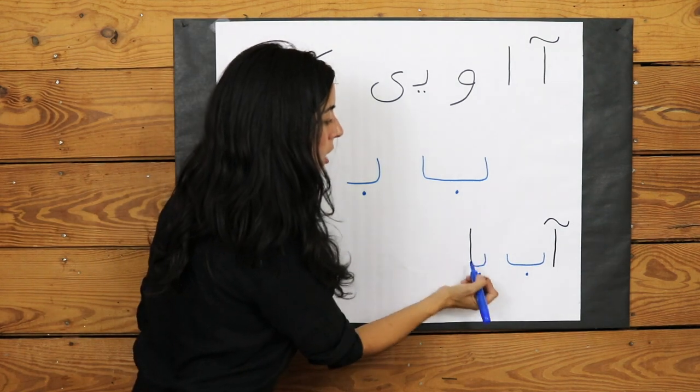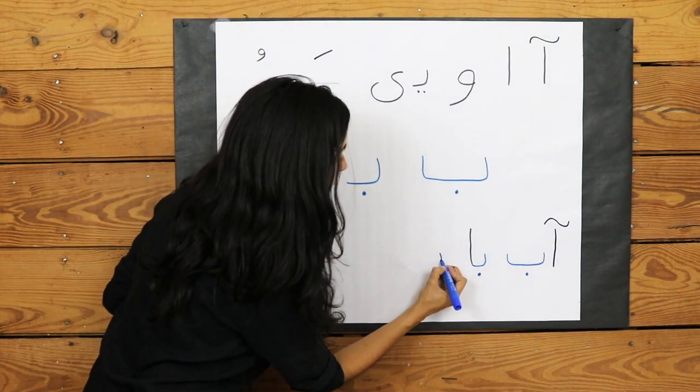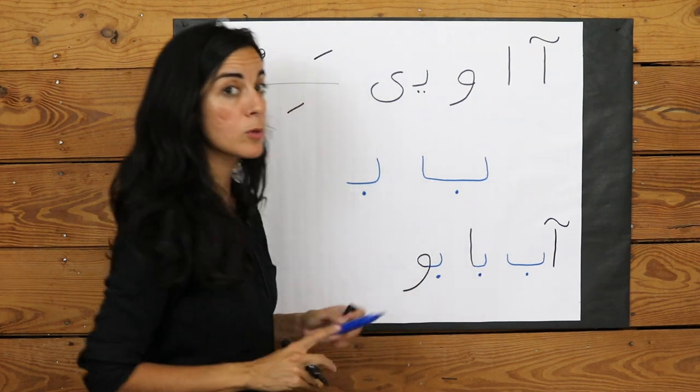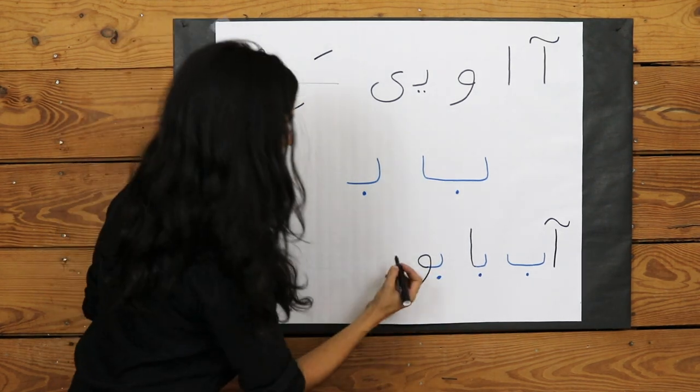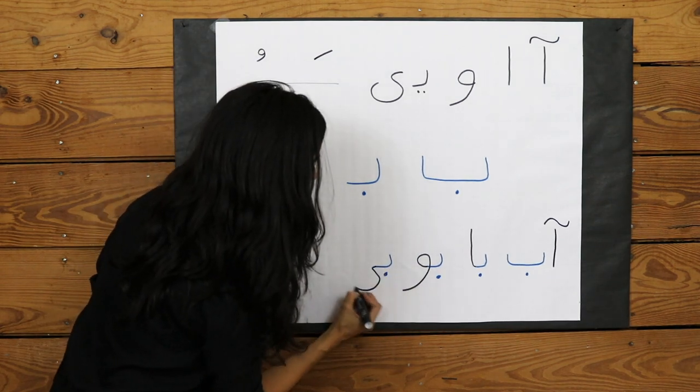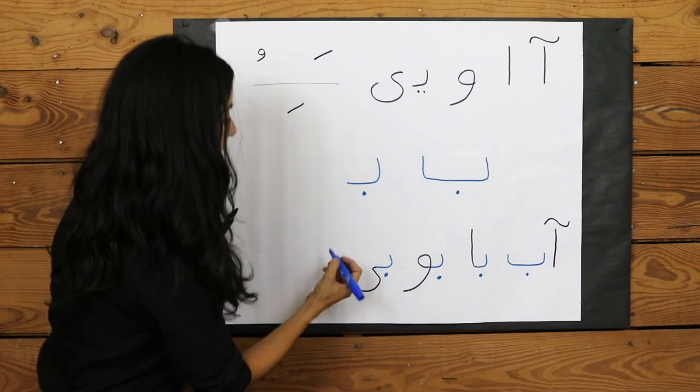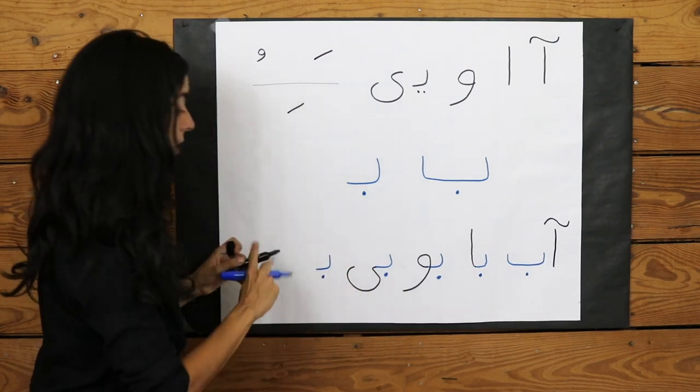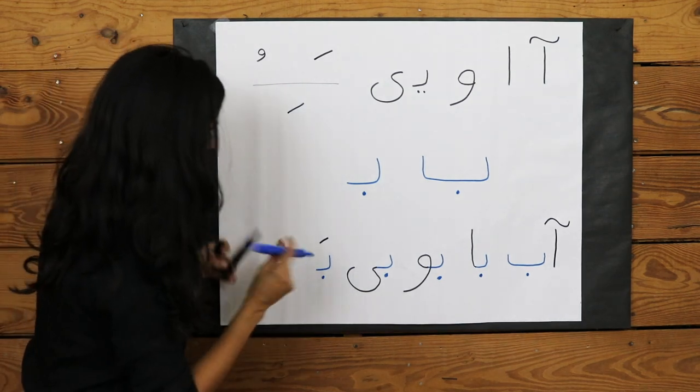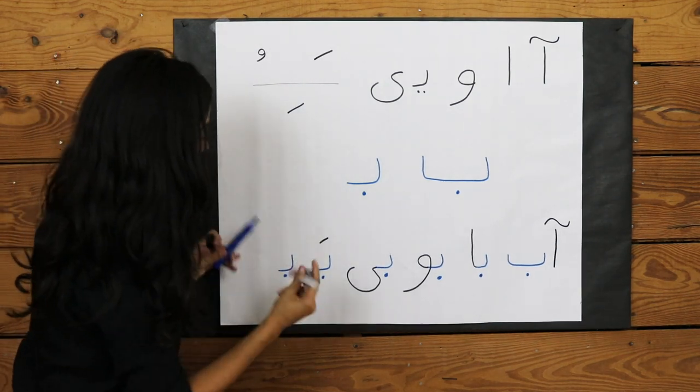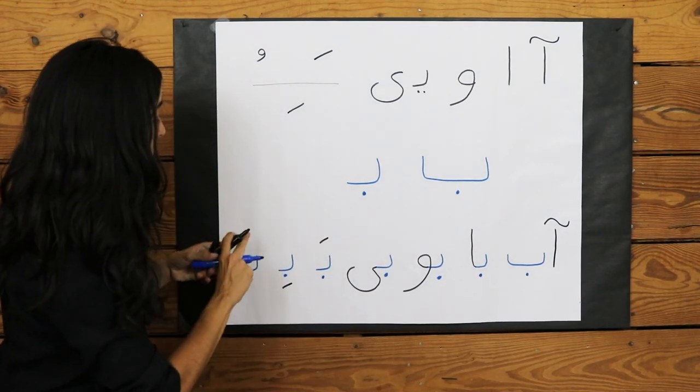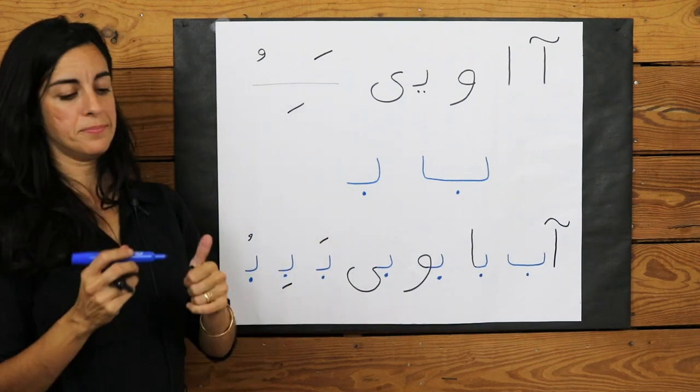Just watch me. So a B and an A becomes BA. A B Kuchik with a U afterwards becomes BU. A B Kuchik with an E afterwards becomes BE. And now let's look at how this consonant interacts with some accents. A B with an A over it becomes BA. A B with the accent below it becomes BE. And a B with an O symbol above it becomes BO.